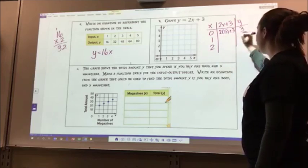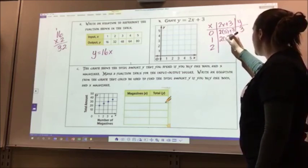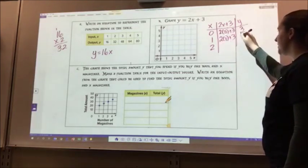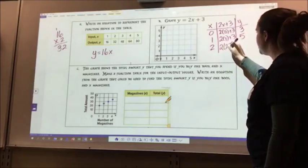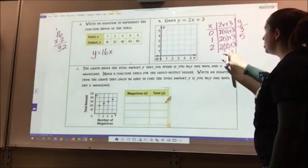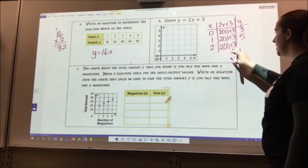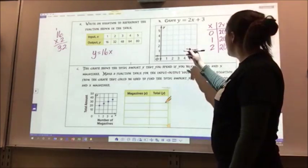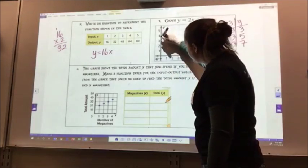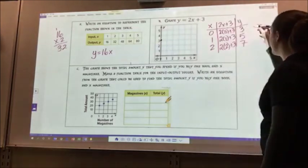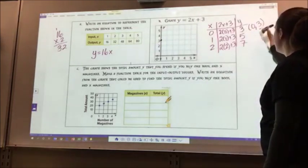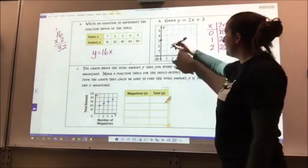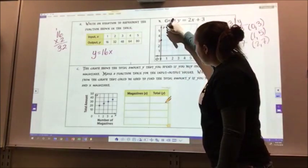This means I take 2 times 0 plus 3. 2 times 0 is 0, plus 3 is 3. Then I do 2 times 1 plus 3. 2 times 1 is 2, plus 3 is 5. Then I do 2 times 2 plus 3. 2 times 2 is 4, plus 3 is 7. So there's my numbers. I start with 0 and I go up to 3. That's my first one. My first point was 0, 3. My second point is 1, 5. So I go 1, 5, and I make the dot. Over 1 and up to 5.